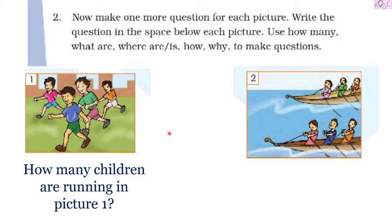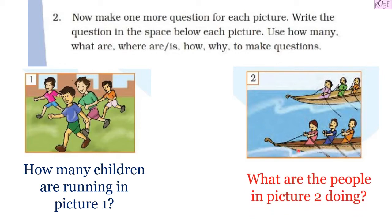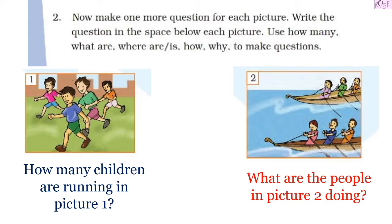Moving on to the second picture — I can see a river here and some people are rowing boats on a river. The question I made based on this picture is: 'What are the people in picture two doing?' This is the question I made based upon this picture.